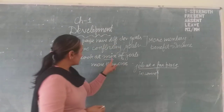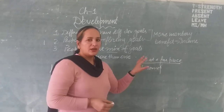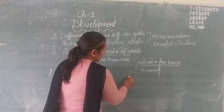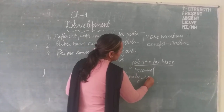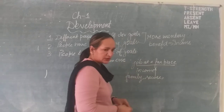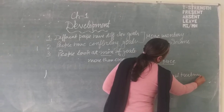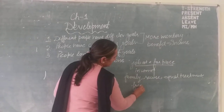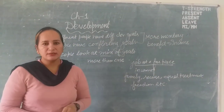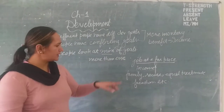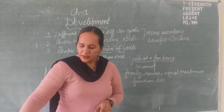That's why people look at a mix of goals. Income is the main criteria they will consider. Apart from income, they will think about their family environment — is it safe, is their job secure in the future, equal treatment, freedom, etc. It means people look at a mix of goals; not only higher income, they consider all these things which are equally important.